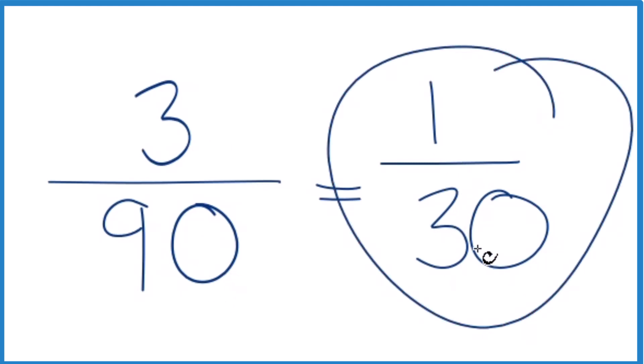And we can't simplify this any further. So these are equivalent fractions. 1 divided by 30, 3 divided by 90, you'll get the same decimal answer.